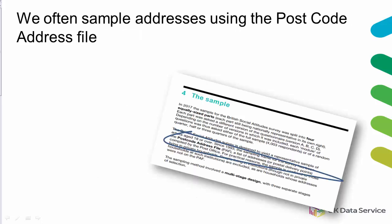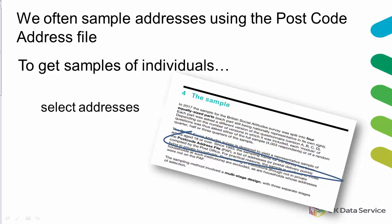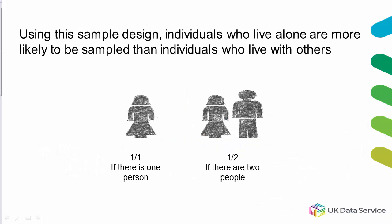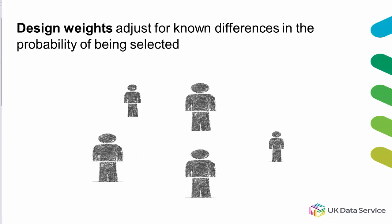For example, surveys in the UK often draw a sample from a list of addresses called the postcode address file. To get samples of individuals, we first sample addresses and at each address select an individual at random. Using this method, individuals who live alone are more likely to be sampled than individuals who live with others. Using the known differences in the probabilities of being selected, we calculate design weights to adjust the sample.